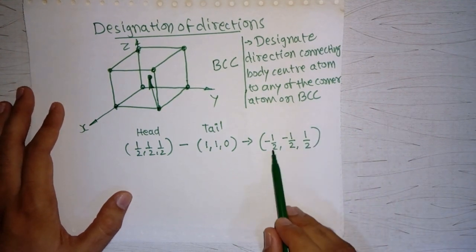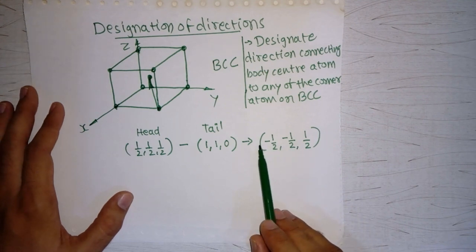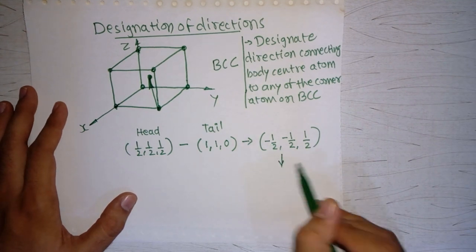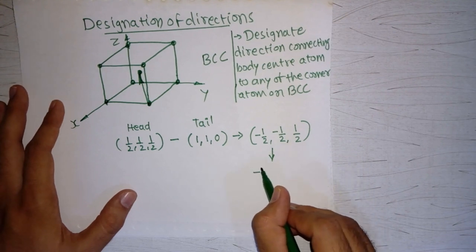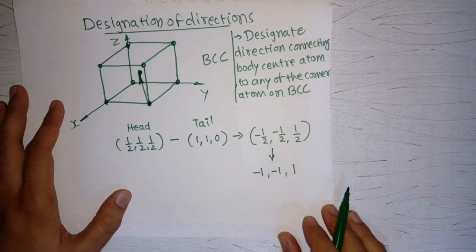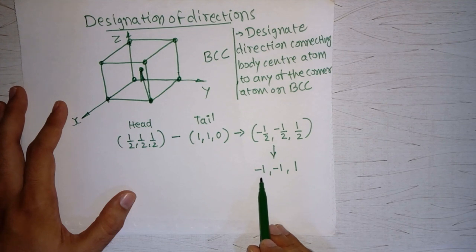Now we have fractions, so we have to remove them. In this case, we multiply by 2. After multiplying by 2, we get minus 1, minus 1, and 1. Now we have negative values. We can write negative values in the designation of direction, but we have to show them by a bar.